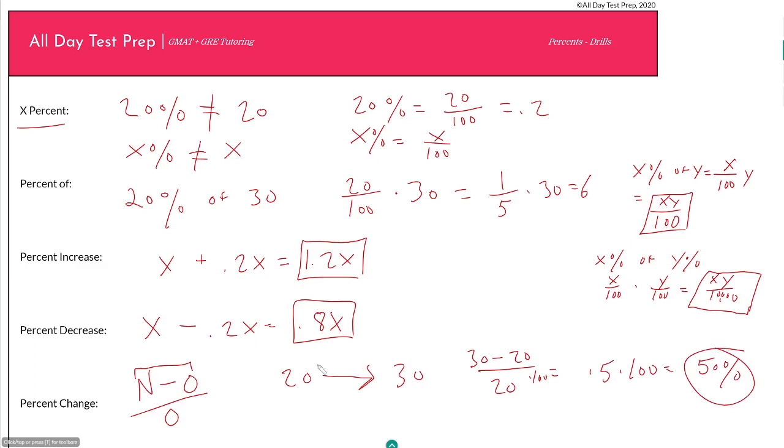Those are your fundamental percent translations. Know how to make these, know how to make them backwards and forwards, know how to make them when they give you numbers as well as when they give you variables. That is really how they take easy and median percent questions and make them hard—instead of giving you numbers, they give you variables. You really need to understand how percents work, and every question we do should build upon these fundamental percent translations. Understand them.